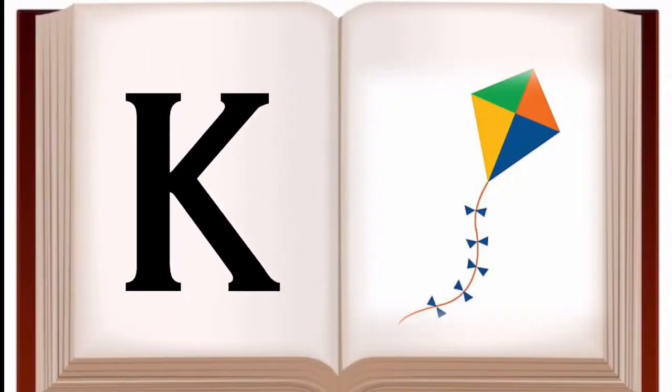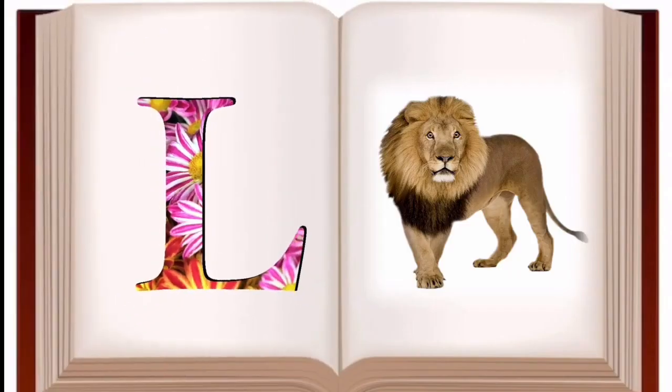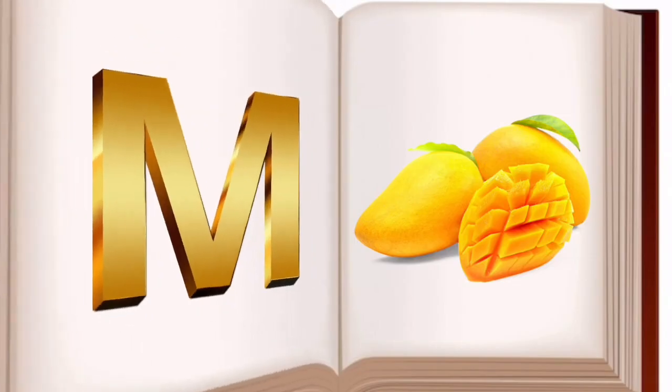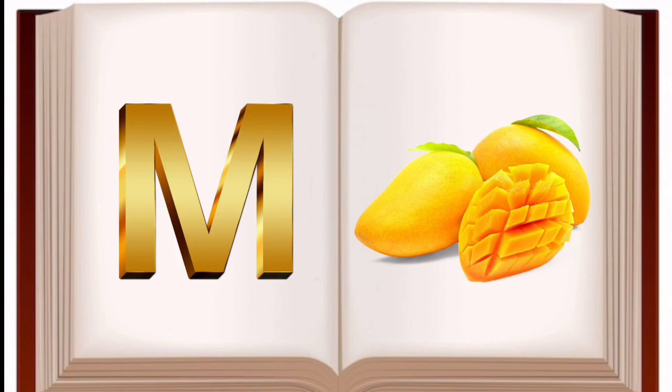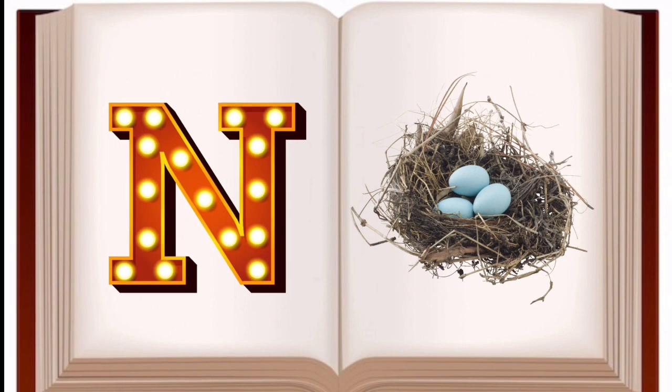K for kite, kite mane patan. L for lion, lion mane sir. M for mango, mango mane aam. N for nest, nest mane ghosla.